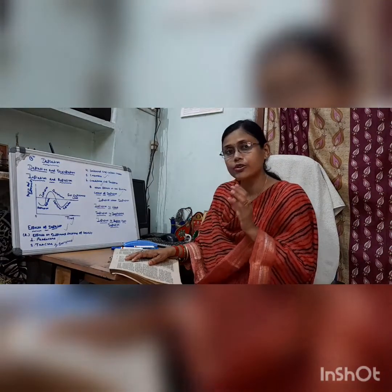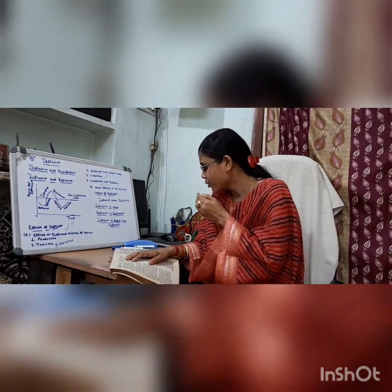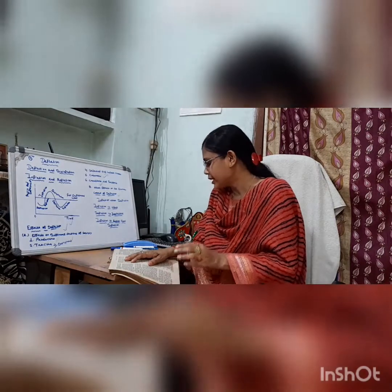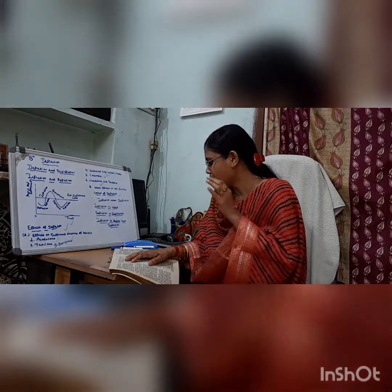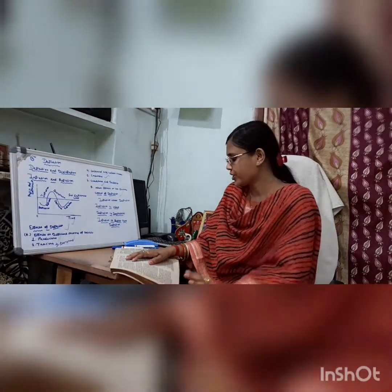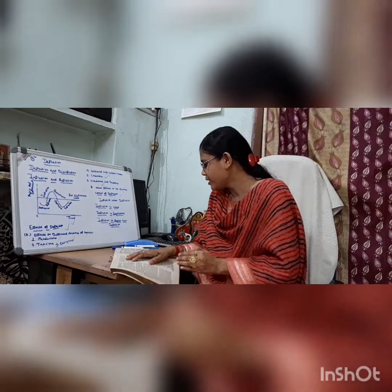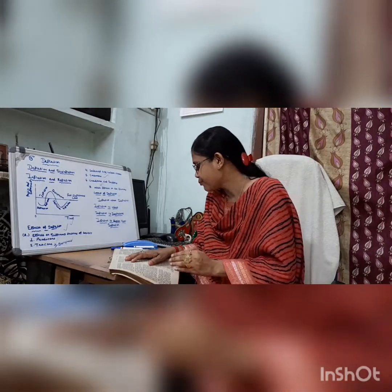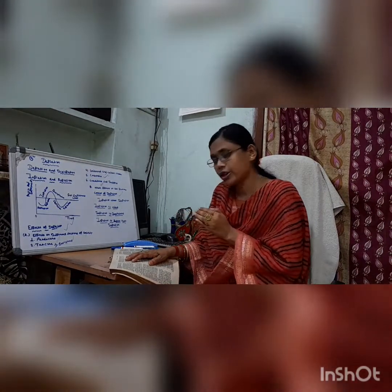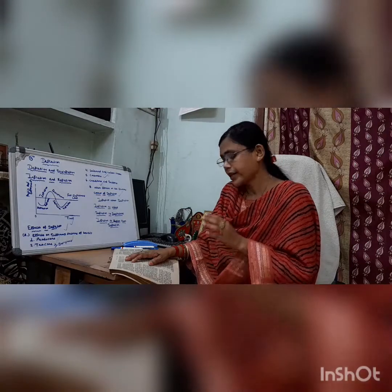Ninth, foreign trade policy. The government should adopt a policy that, on the one hand, increases exports and, on the other hand, reduces imports. This kind of policy will go a long way in solving the problem of overproduction and help overcome depression. Tenth, regulation of production. Production in the economy should be regulated in such a way that the problem of overproduction does not arise. Attempts should be made to adjust production with existing demand to avoid overproduction.